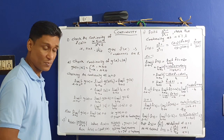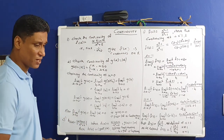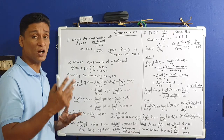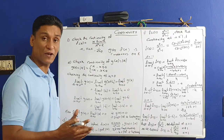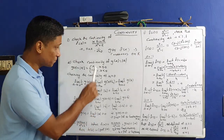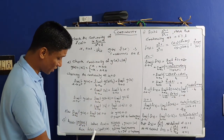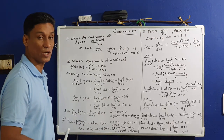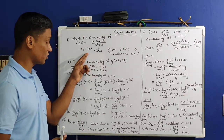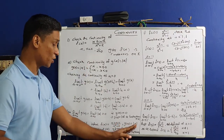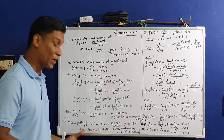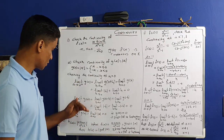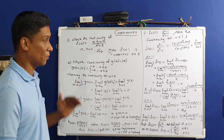We already proved that f(x) is continuous and g(x) is continuous. Therefore g(f(x)) will also be continuous. So |x·sin(x)|/(x²+2) is also continuous everywhere. This is our third problem.